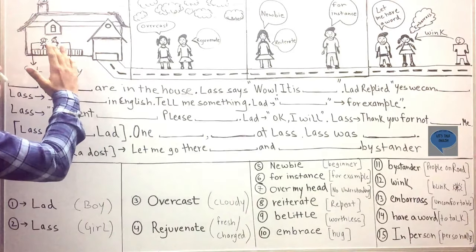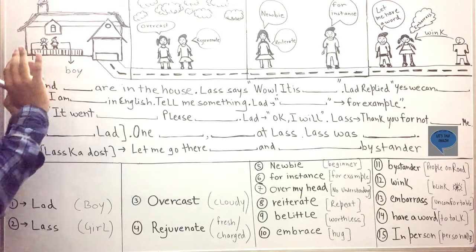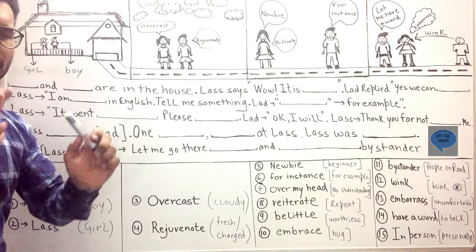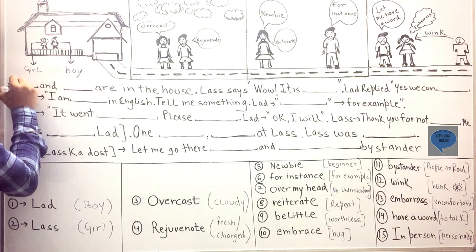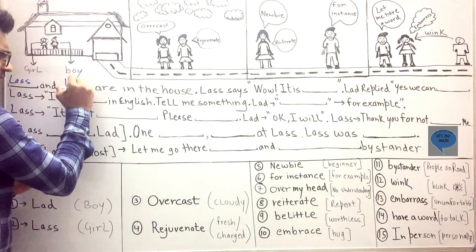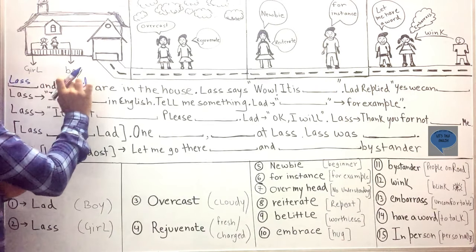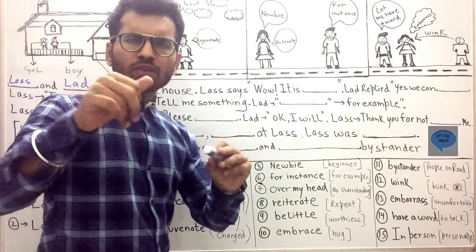So in the first picture, there's a girl and a boy. When it comes to the girl, the girl is considered as lass and boy is considered as lad. So lass and lad are in the house, they both are in the house, and you know what